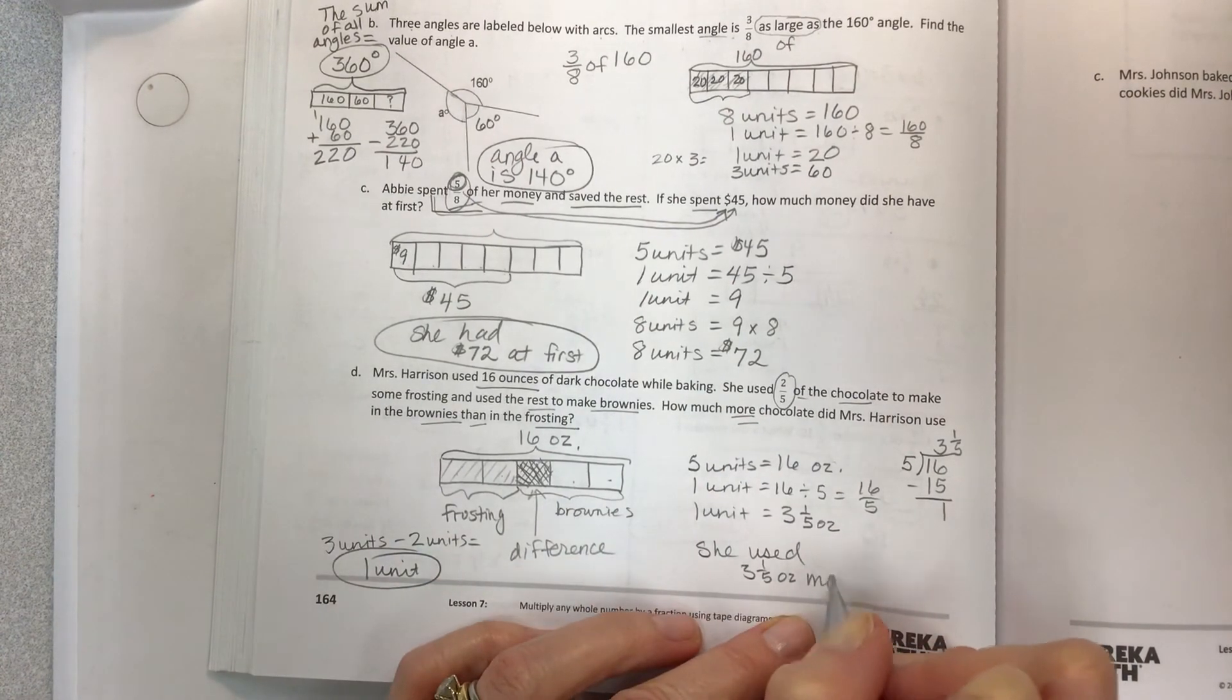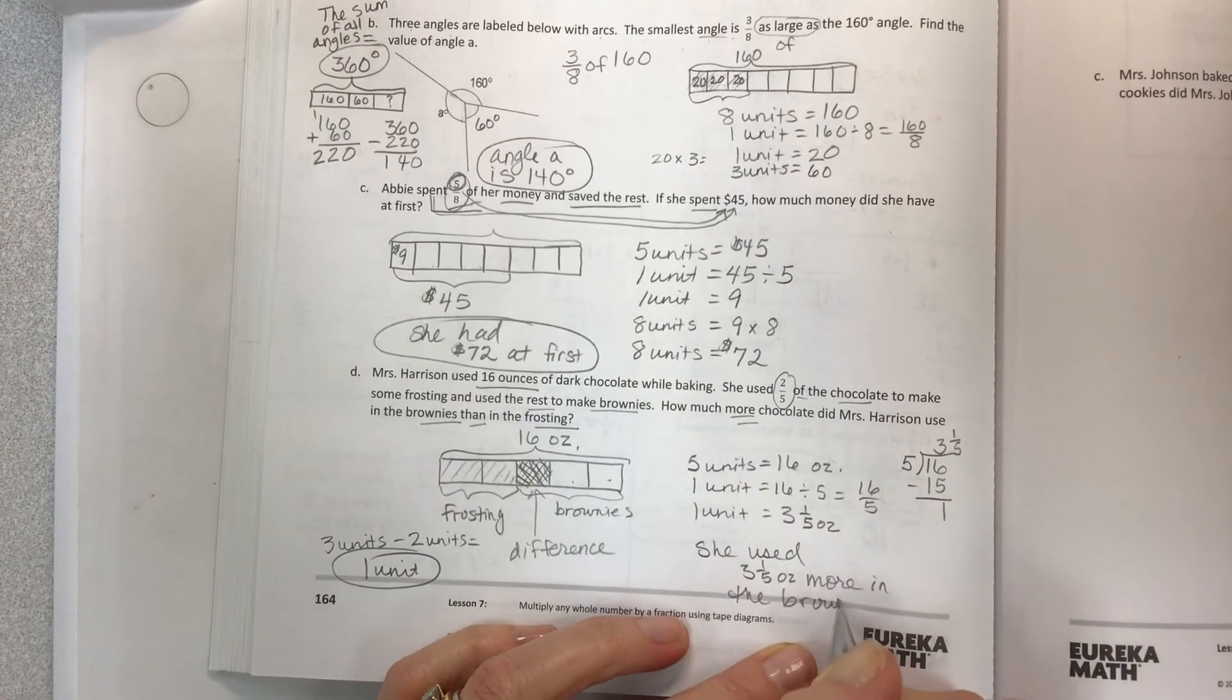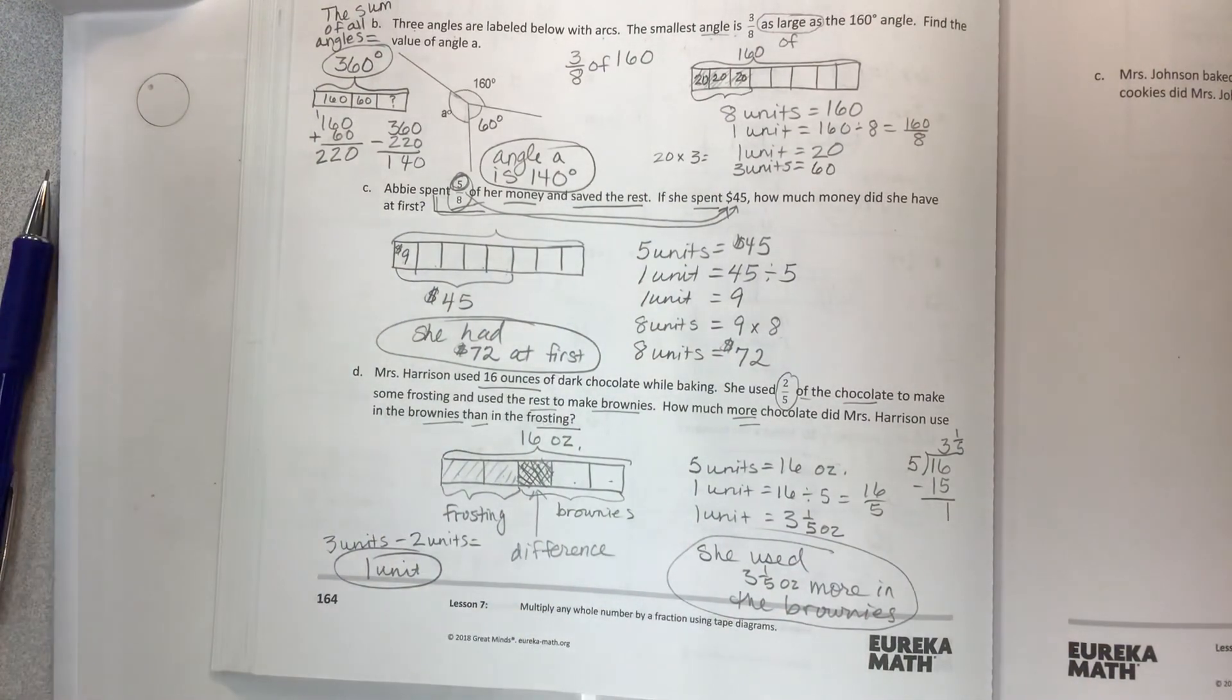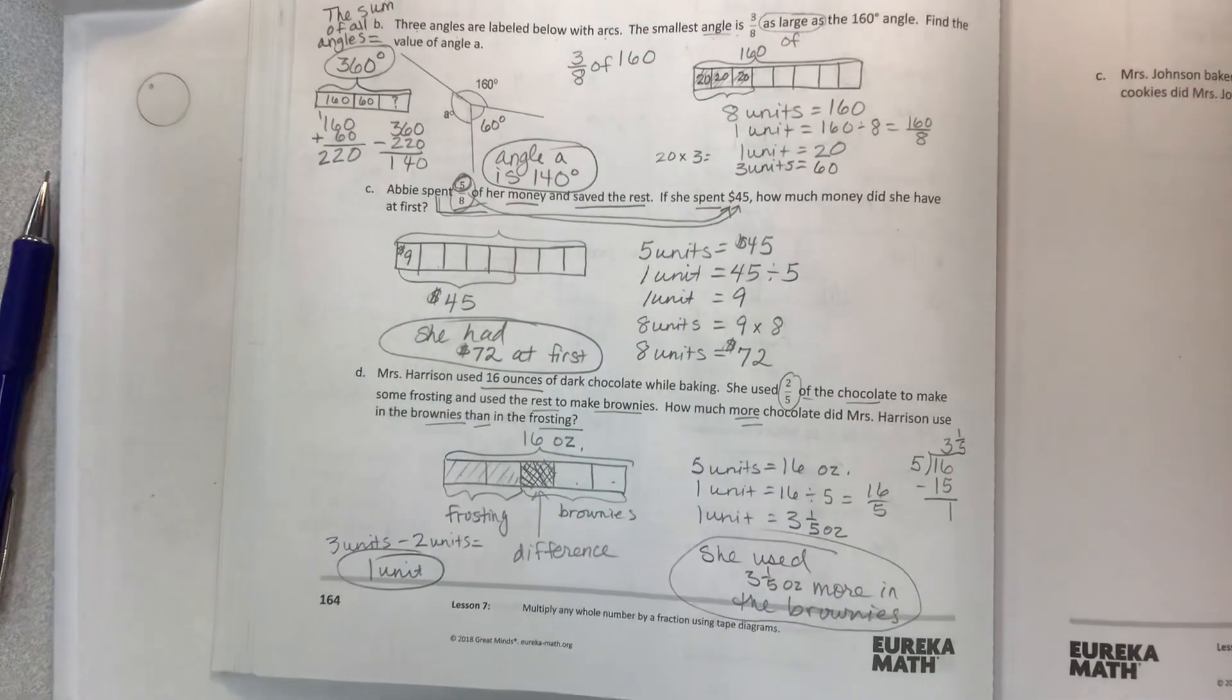The difference or how much more chocolate is three and one-fifth. She used three and one-fifth ounces more in the brownies. I hope this is helpful. Click subscribe, come back again. I will see you on another math video another day. Have an excellent afternoon. Bye for now.